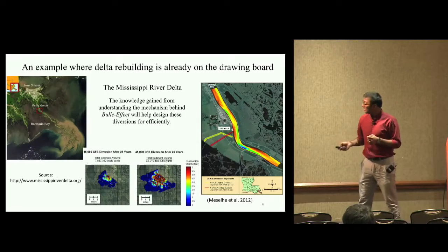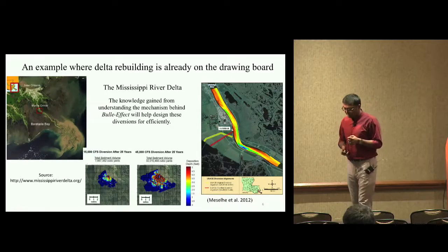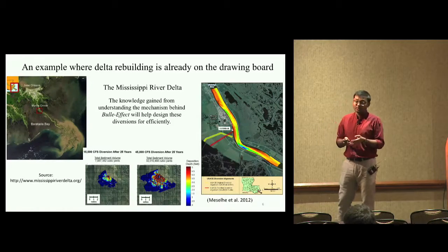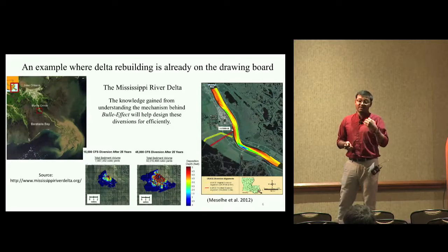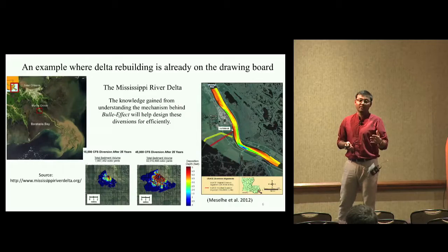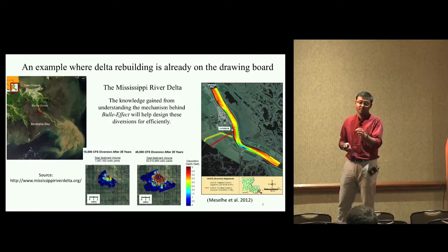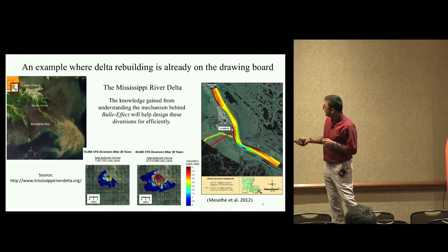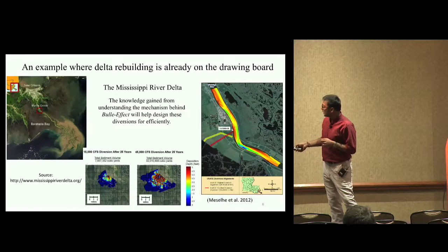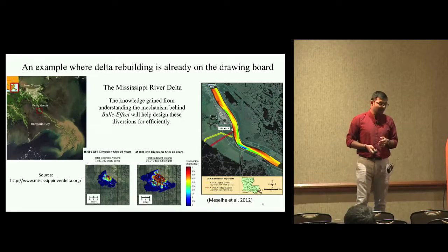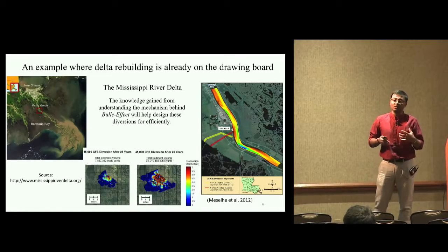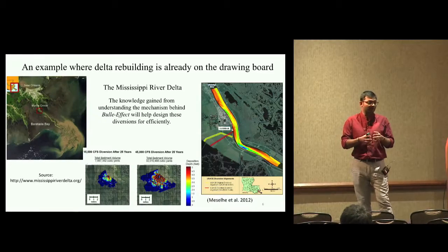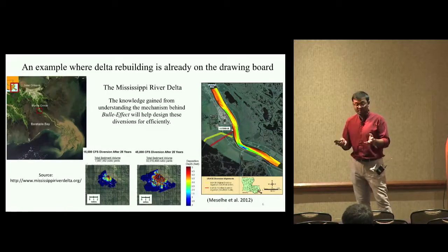A prime example is the Mississippi River Delta. Delta rebuilding is already on the drawing board. Studies show that if Mississippi River Delta is not rebuilt, within the next 50 years, almost 50 to 75 percent of Mississippi River Delta, that is the state of Louisiana, might be lost. The US Army Corps of Engineers have studied creating these diversions to rebuild land artificially.